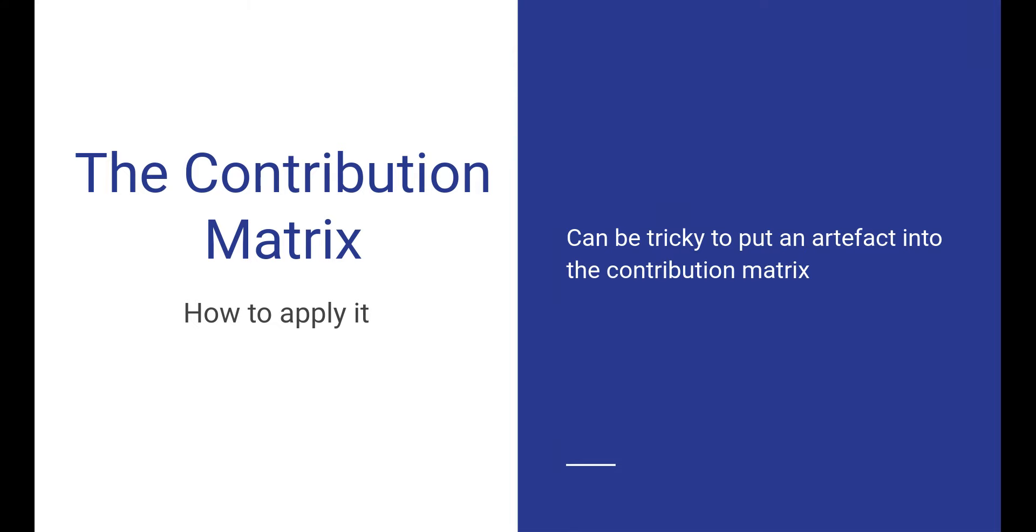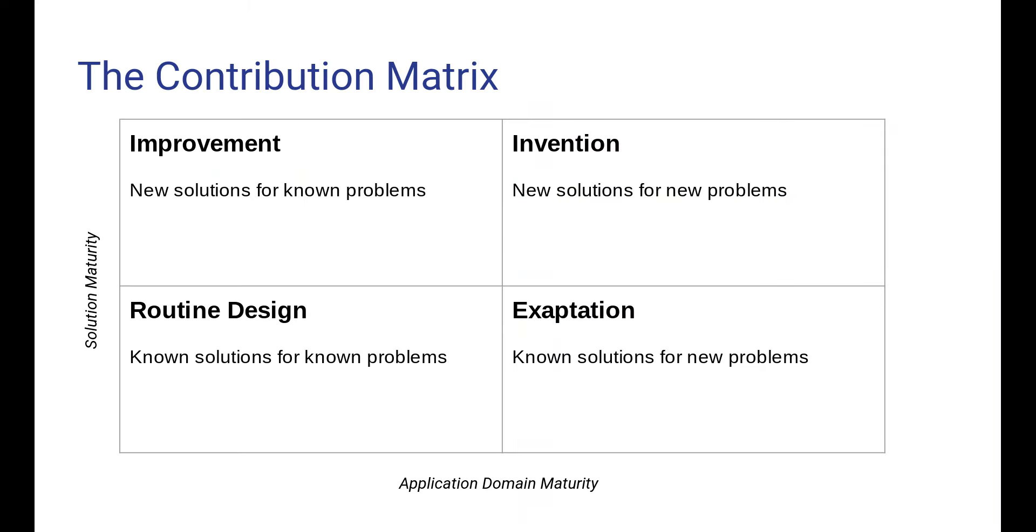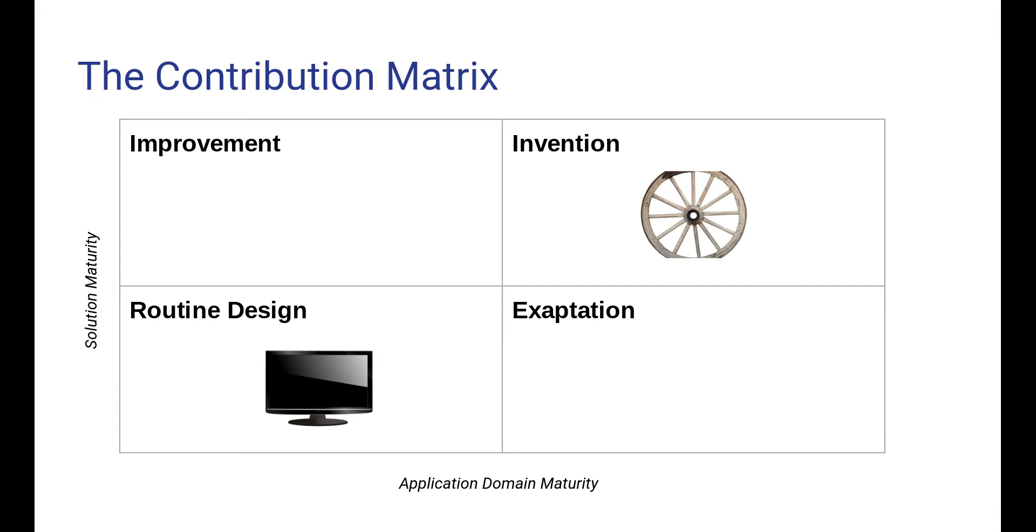And there was also some question here about the contribution matrix and how to apply it. Sometimes it's tricky to put an artifact into the right place. OK, here is the contribution matrix. And we have these four different boxes. Routine design, not really design science, it's about known solutions for known problems. The solution maturity is already very high here, and it's a well-known practice application domain. Improvement is when you create new solutions for known problems, very common. Invention is radically new solutions for new problems. And exaptation, then you take an existing solution and you move it to a new practice.